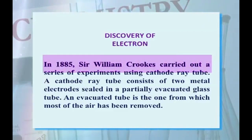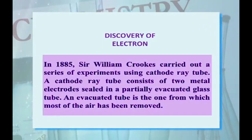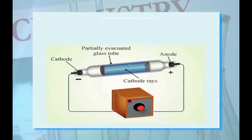Discovery of electron. In 1885, Sir William Crookes carried out a series of experiments using a cathode ray tube. A cathode ray tube consists of two metal electrodes sealed in a partially evacuated glass tube. An evacuated tube is one from which most of the air has been removed. The negatively charged electrode is called the cathode, whereas the positively charged electrode is called the anode. These electrodes are connected to a high voltage source. This cathode ray tube produces the negatively charged particles which were later called electrons.